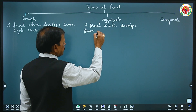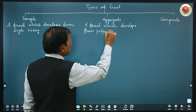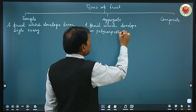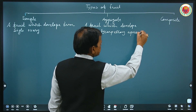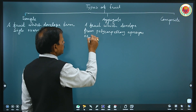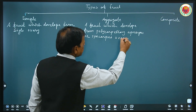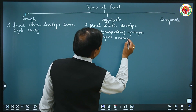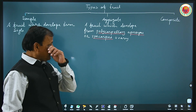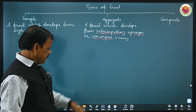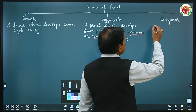Aggregate fruit develops from polycarpellary — either apocarpous or syncarpous ovary. These two words are very important: polycarpellary, either apocarpous or syncarpous. So the fruit which develops from many ovaries — that means polycarpellary carpels — may have many ovaries.